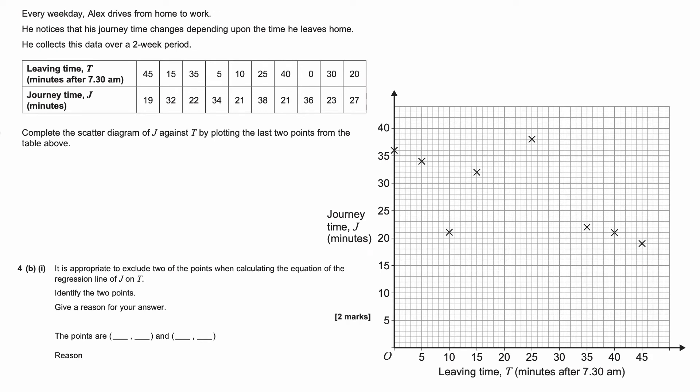So here we have a different question. We have some data for Alex driving home from work. We've got information on what time he leaves, the number of minutes after 7.30am and comparing it to his journey time. So the first thing we're asked to do is complete the scatter diagram by plotting the last two points. So we can look on the table. It's these two points here that are missing. So we want 30 against 23. So if I find 30 here and 23 here, and then we want 20 and 27. So that is about here. Something like that. I'm sure yours will be neater.